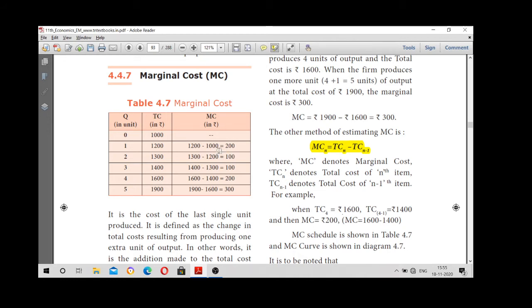So marginal cost is nothing but addition made to total cost. If you see 200, 100, decrease and increase. 200, 100, 100 and increase. Nature of the curve is U-shaped curve.